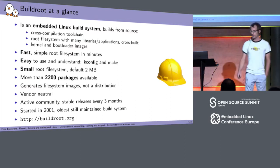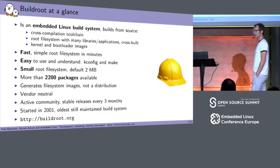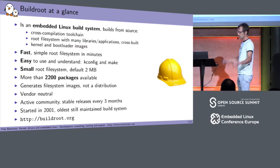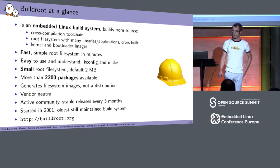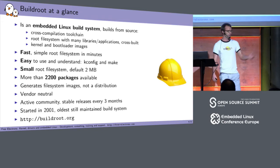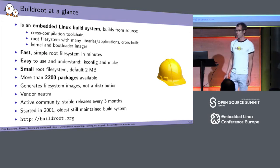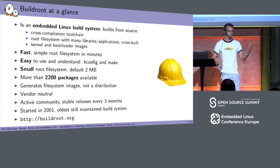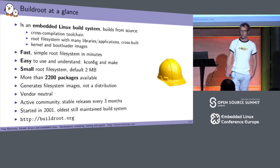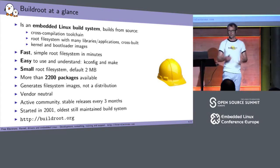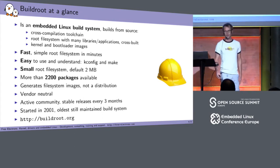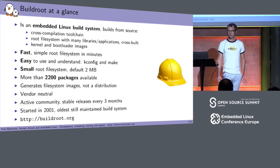Most of you know Buildroot, so I'm going to go pretty quickly over that. It's an embedded Linux build system. The idea is that we have source code for a number of software components — the Linux kernel, the bootloader, perhaps BusyBox, graphical libraries, network libraries, a bunch of applications — and we want to cross-compile everything and generate a root file system image that you can put on your embedded device.